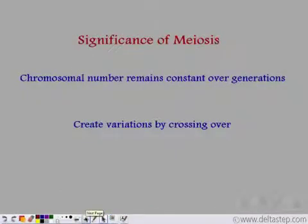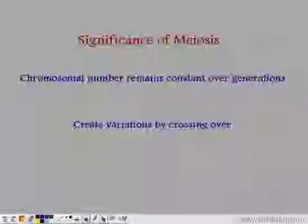So meiosis does not only maintain the constancy of chromosomal number across generations, it also creates variation by crossing over between non-sister chromatids.